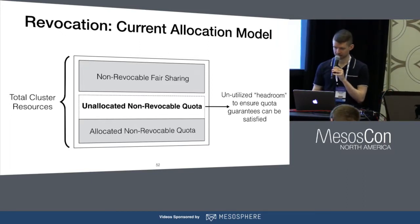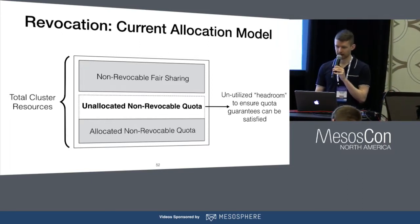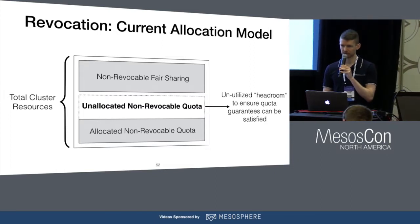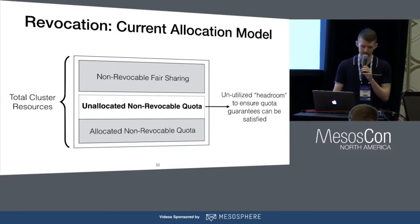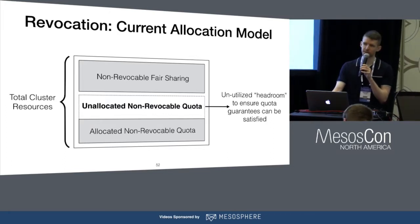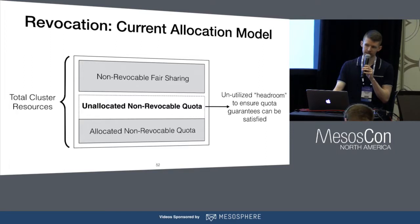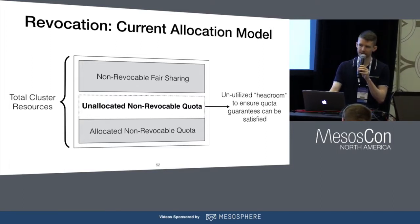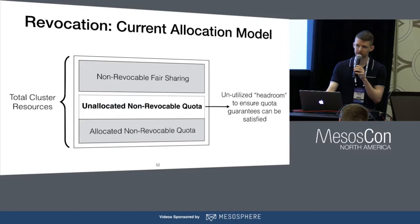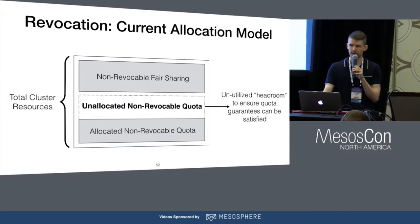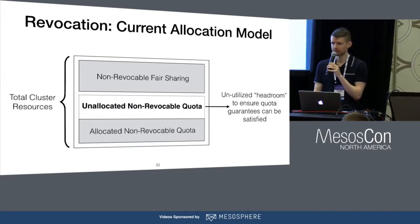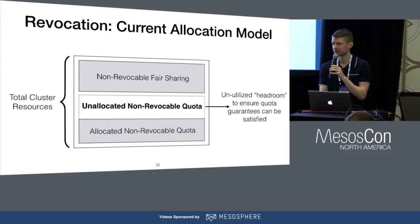Q: What's the timeline for revocation and priority tiers? There's no timeline for priority tiers. For revocation, the design is being worked on right now — 1.5 will be in about two months, which might be a little tight, so it might be 1.6. Hierarchical quota should be 1.5.